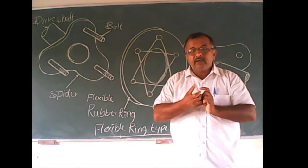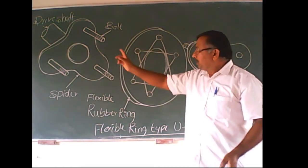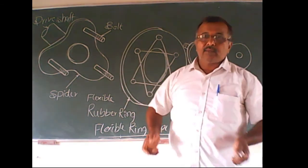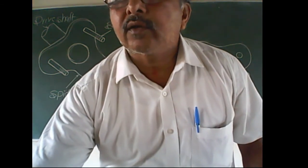When we join three units, two spiders and a rubber ring, it becomes a flexible ring type of universal joint. Thank you.